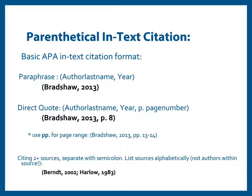The basic format for APA in-text citations is author last name, comma, year. Since the majority of your paper should be in your own words — that is paraphrased — this is the format you should be using most often. When you are using direct quotations, that is copying a bit of text word for word from the original source, you also need to include the page number.